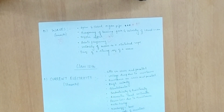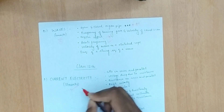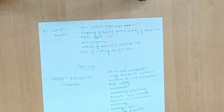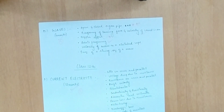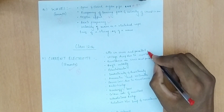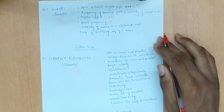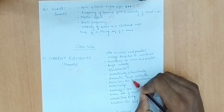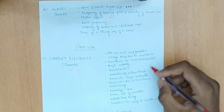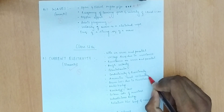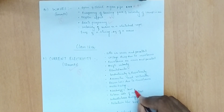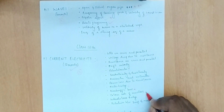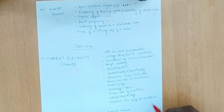Now for Class 12 topics, starting with current electricity — three questions are expected. Topics include cells in series and parallel, voltage drop due to resistance, resistance in series and parallel, drift velocity, potentiometer, conductivity and resistivity, ammeter and voltmeter, power loss, metre bridge, Kirchhoff's laws, color code, Wheatstone bridge, and relation between temperature and resistance.